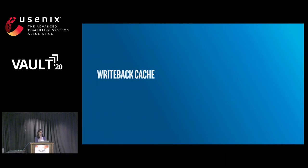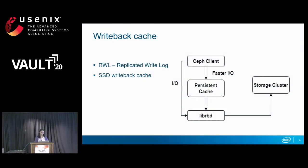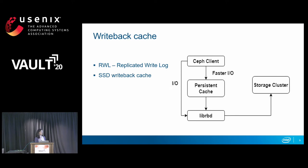This brings me to write-back cache. In order to have something persistent with larger capacity, we saw value in implementing a write-back cache that works with SSDs and persistent memory. Instead of requests going directly through to libRBD, the request now goes to the cache first, then to libRBD, and then to the cluster. The goal is to have faster I/Os for RBD workloads.